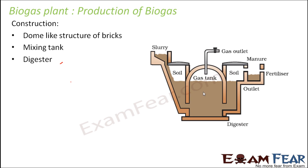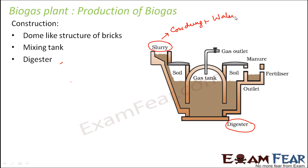Next is the digester. From the mixing tank, the slurry goes into the digester, which is a sealed chamber. You can see the slurry here — it is a mixture of cow dung with water. From the mixing tank it comes into the digester, where the process of anaerobic fermentation takes place.